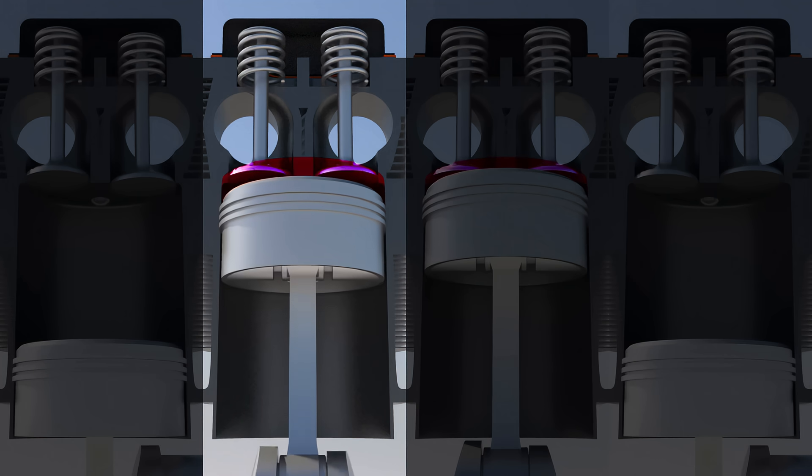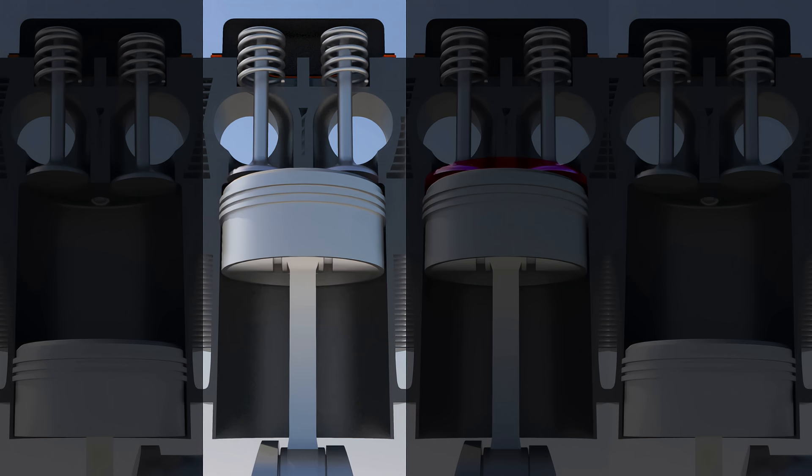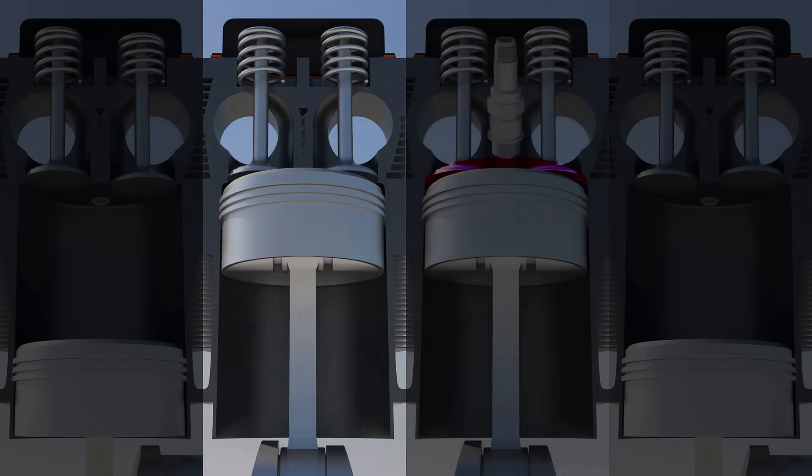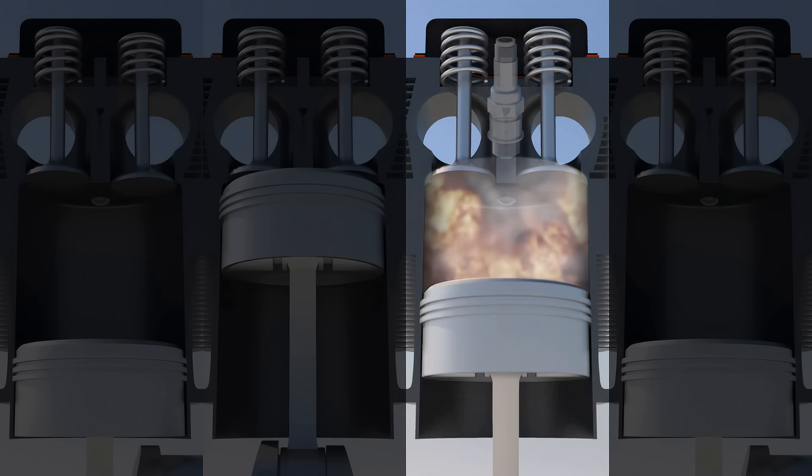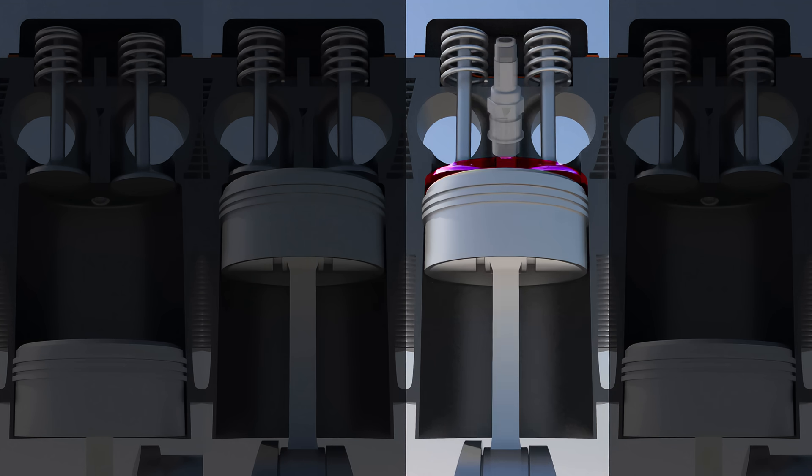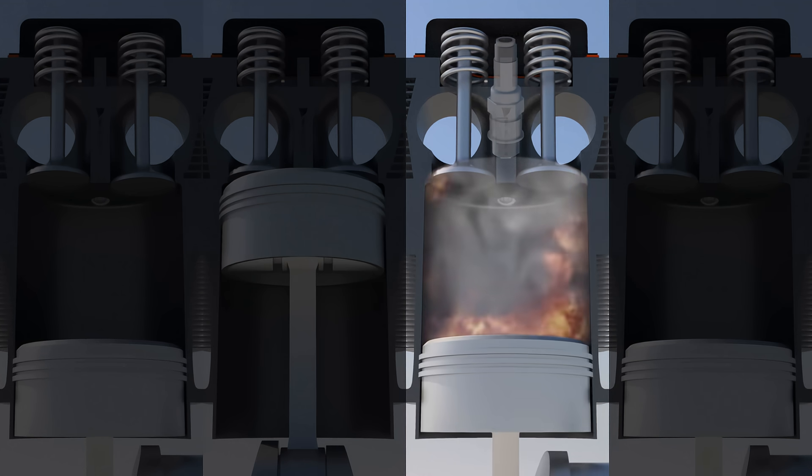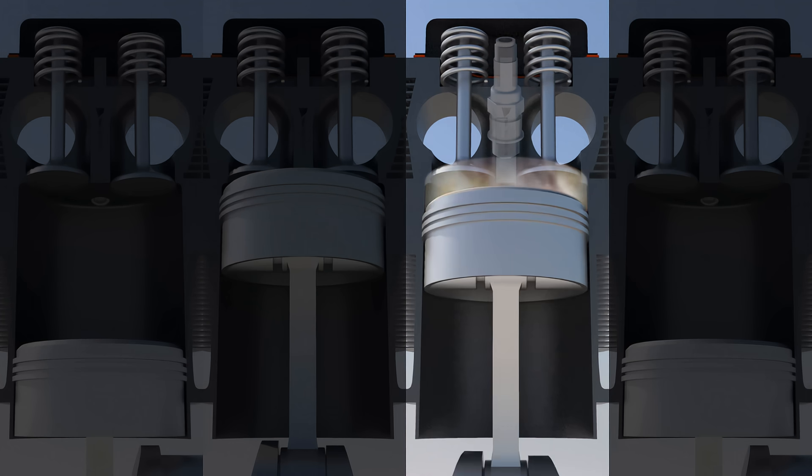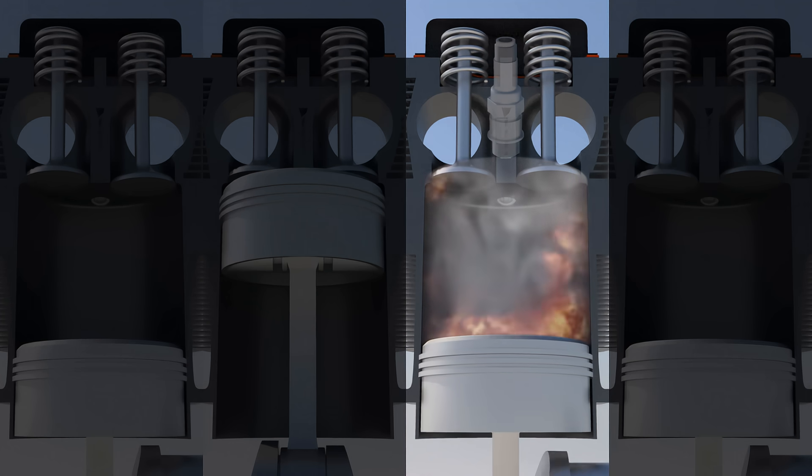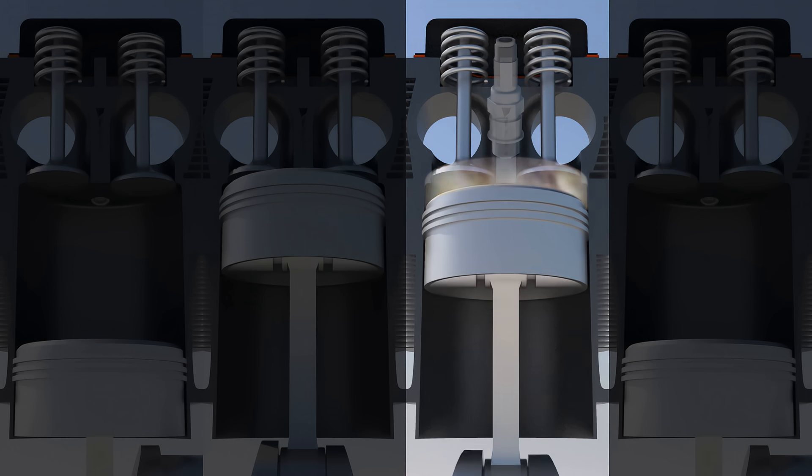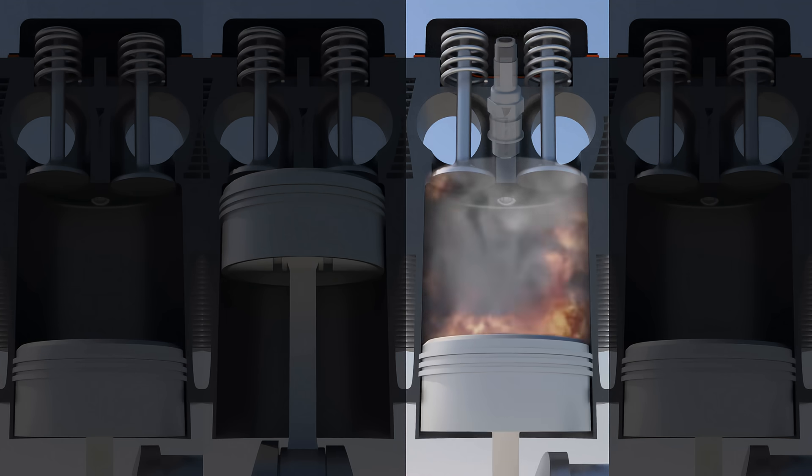Once the piston approaches the top of the cylinder, we begin the third stroke, power. Two spark plugs at the head of the cylinder each let off a spark, which ignites the fuel mixture and makes it combust. This controlled explosion pushes the piston back inward towards the base of the cylinder, which in turn rotates the crankshaft, and therefore the propeller.